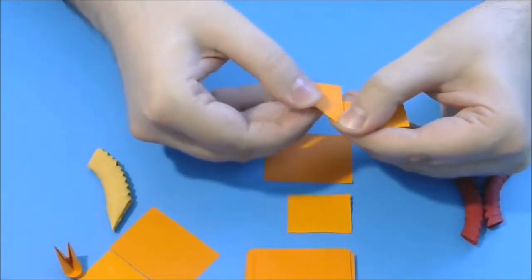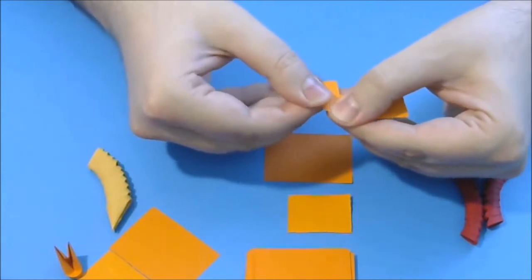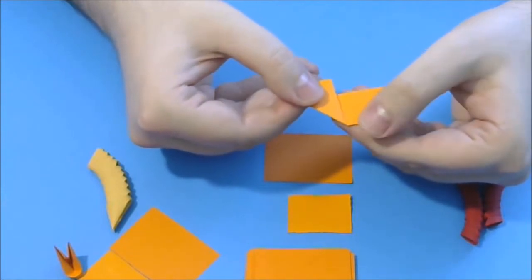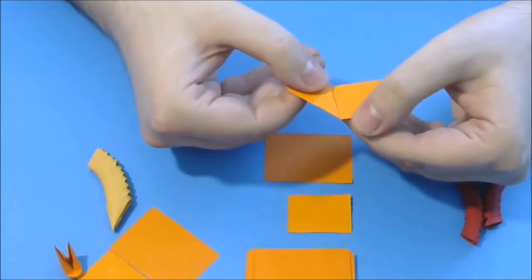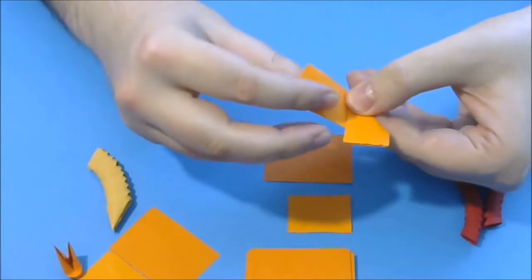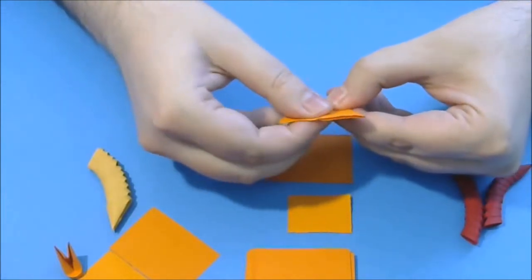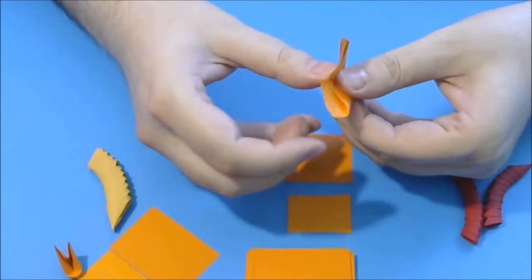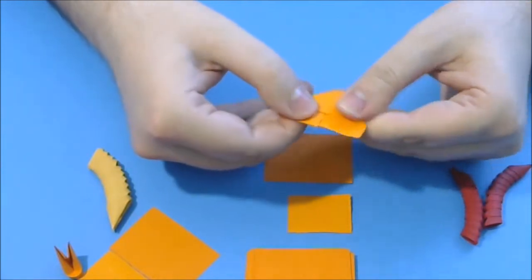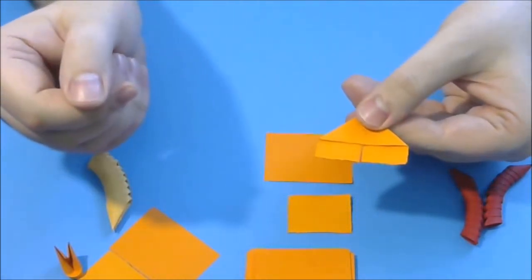This step is very important to obtain good quality pieces. We turn the paper over and we bring the other part to the middle, like this and now I will show you the result.